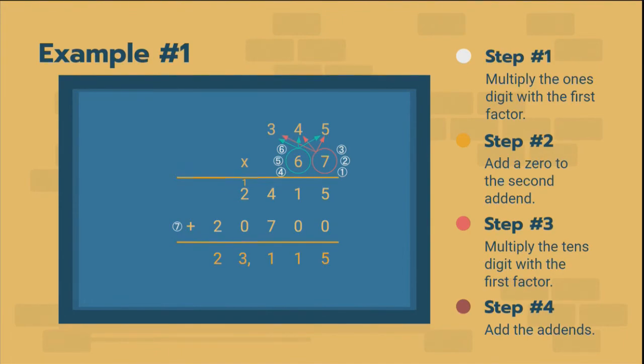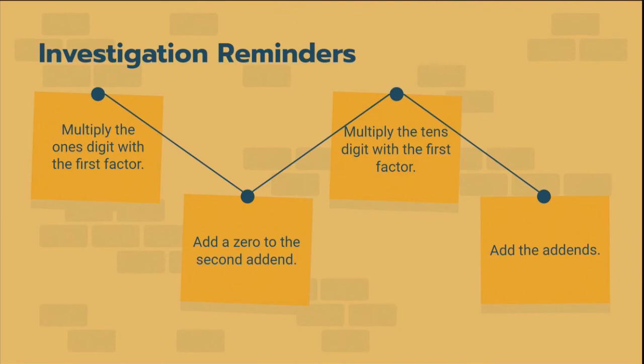And then your seventh step is adding your two addends together. Seven steps to a long multiplication problem. A traditional multiplication problem. You can't take shortcuts. So multiply the ones digit with your first factor. Make sure to add that zero. Multiply your tens digit with the first factor. And then add your addends together.